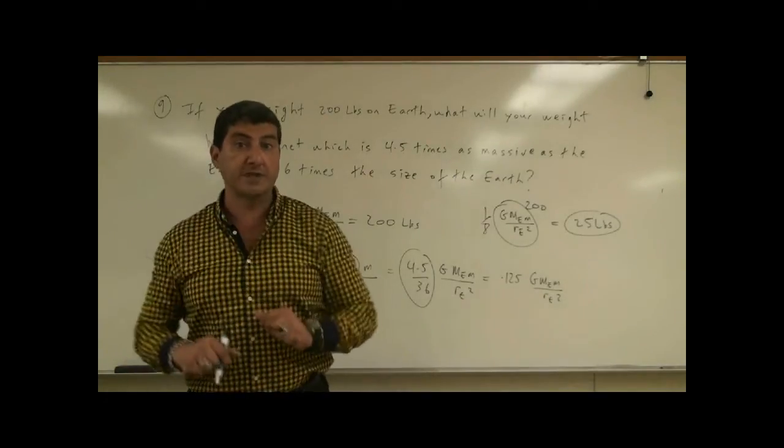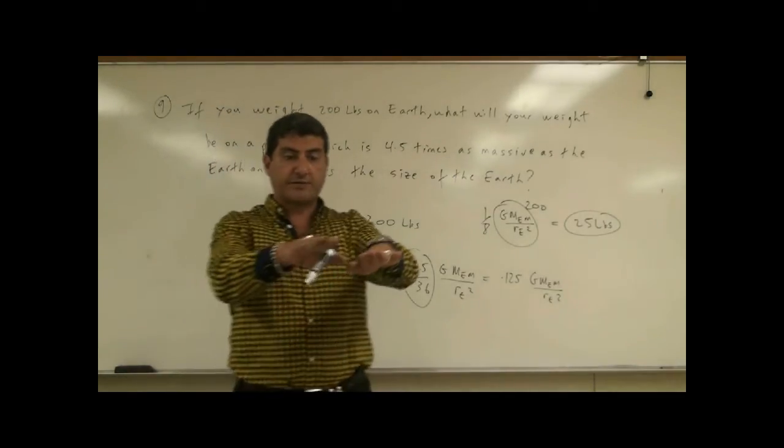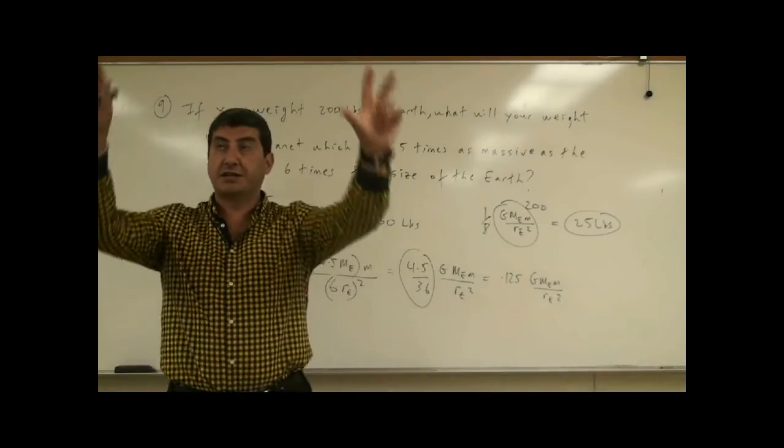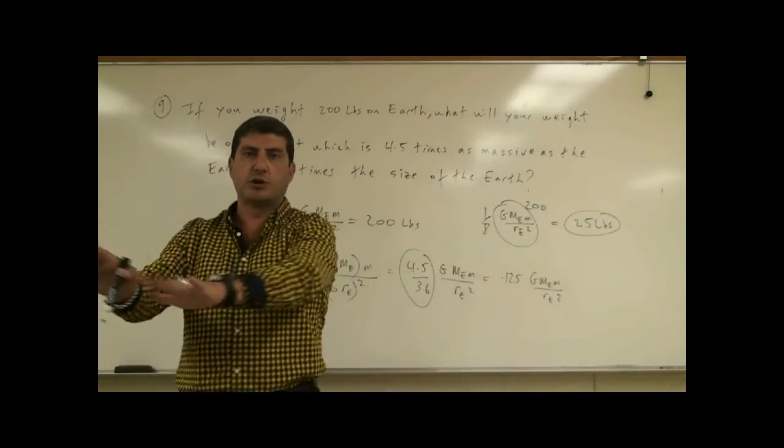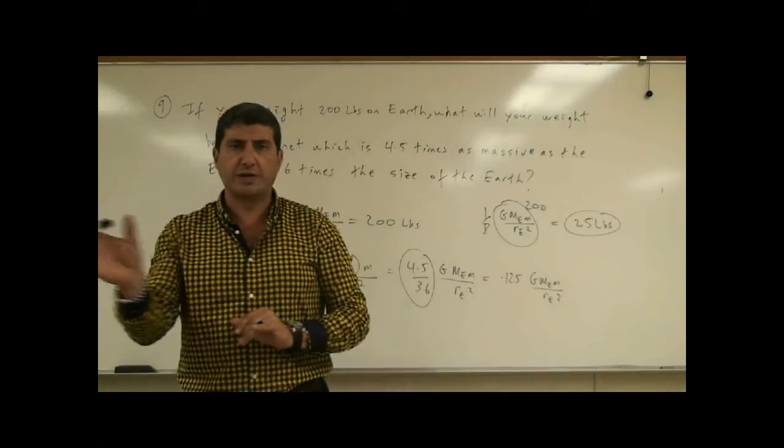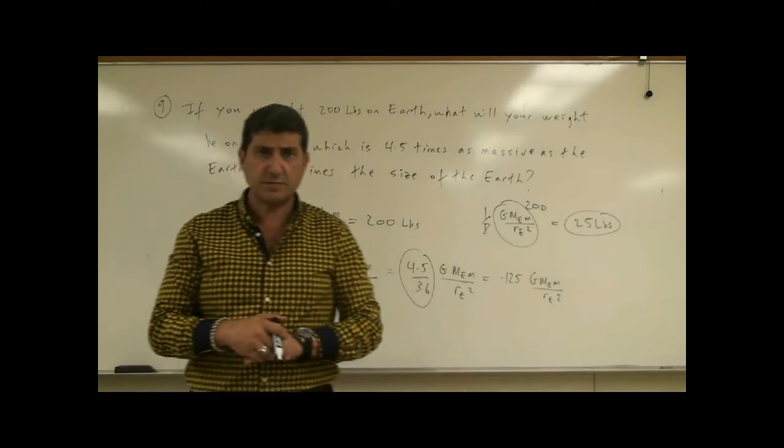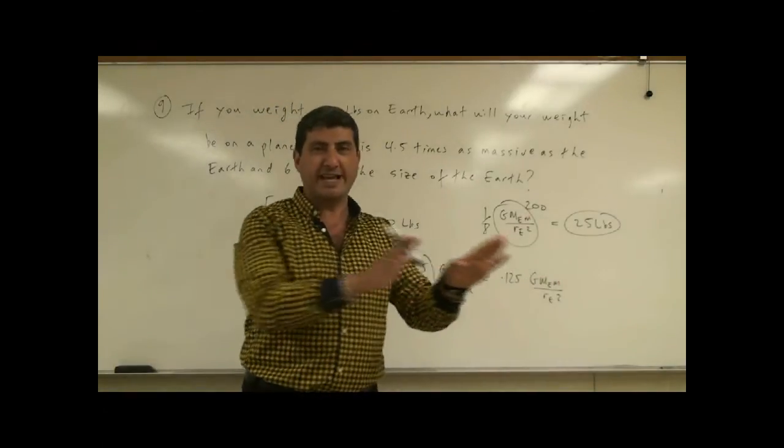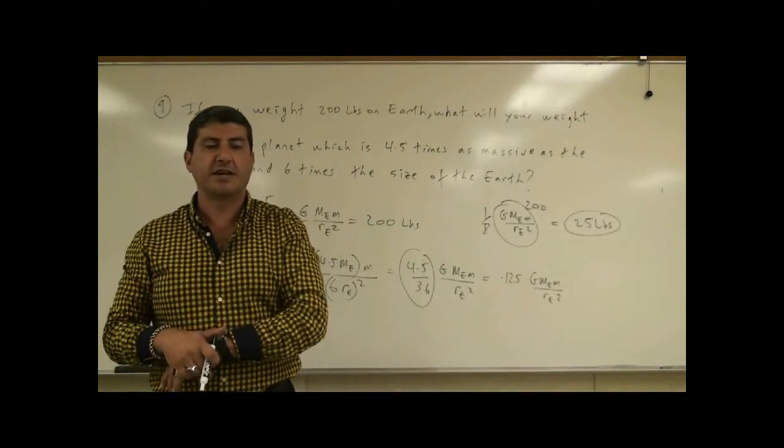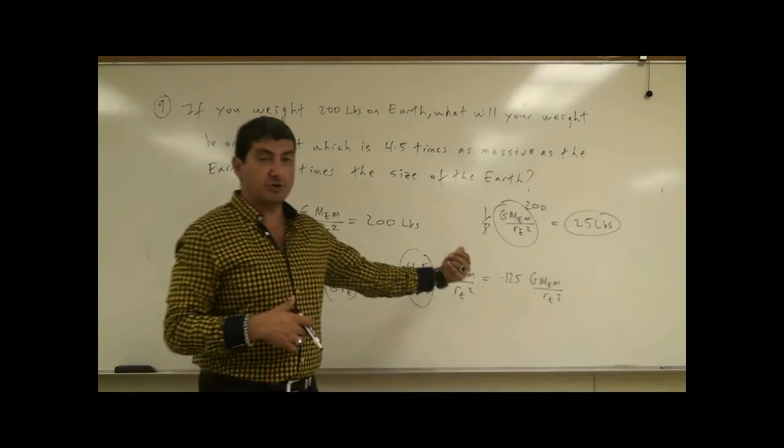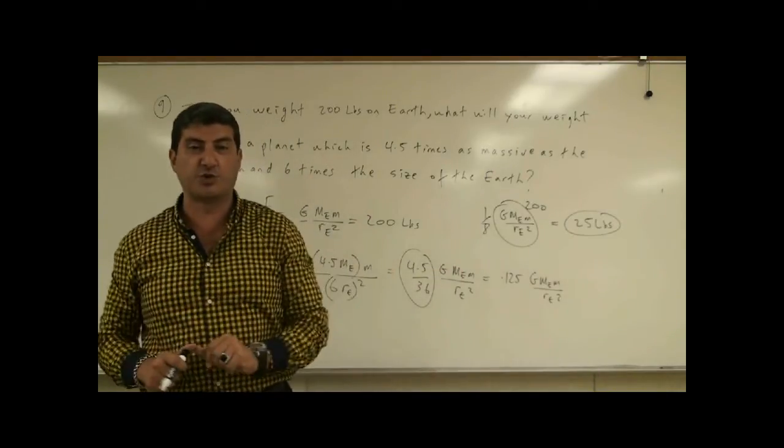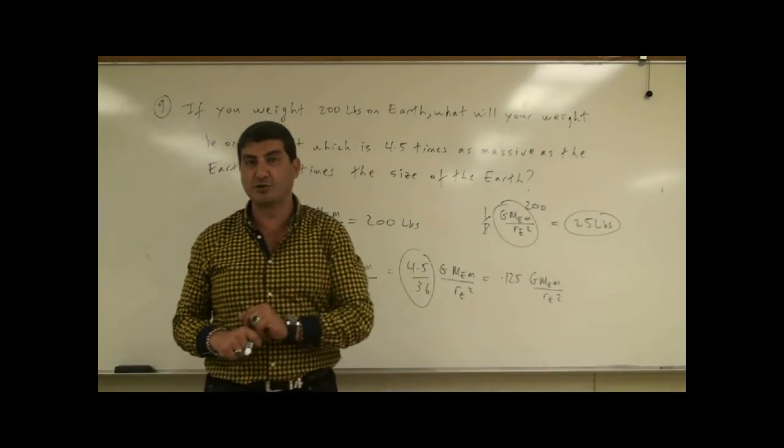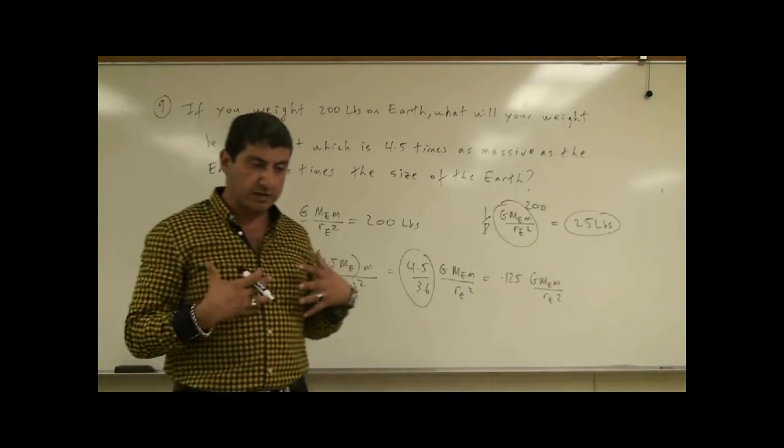Then go to Griffith Observatory. Griffith Observatory has different scales for the different planets. Pluto and all the way down to Mercury. So you weigh yourself on each of those planets. And then see if what you calculated and what those scales are showing are the same. Then there'll be a good little experiment you can do.